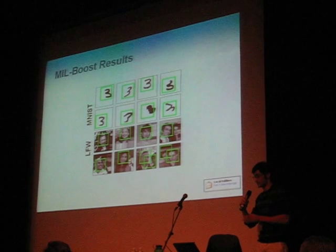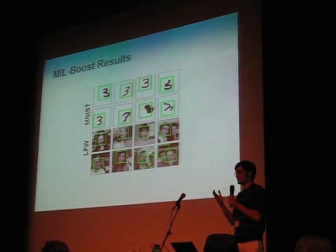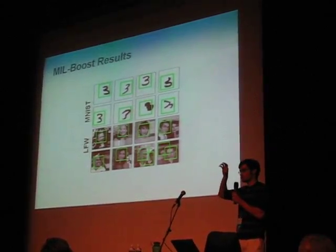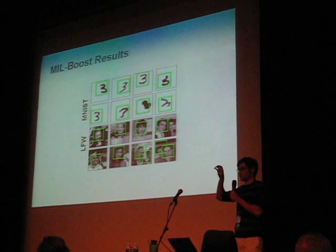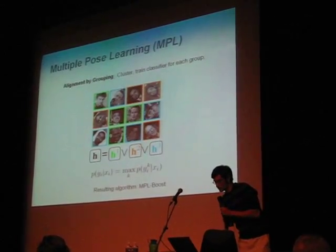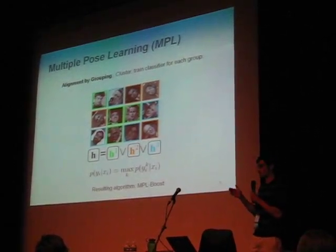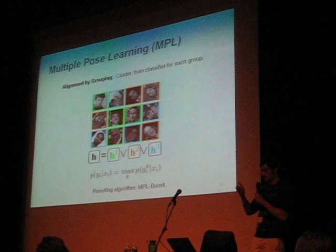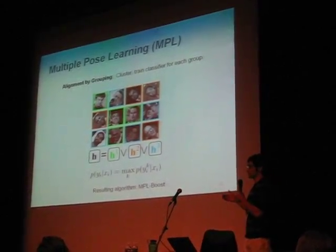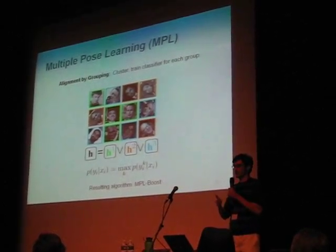Where would this type of alignment not work well? Suppose you have images of faces with out-of-plane rotations — no matter how much you try to find the right sub-regions in the images, you still can't align the data. What you can do instead is cluster the images into coherent groups and then train a classifier for each coherent group. And again, we want to do this simultaneously: simultaneously train several classifiers and cluster the data.